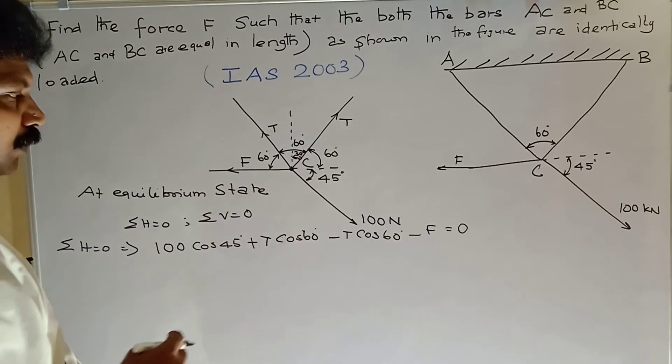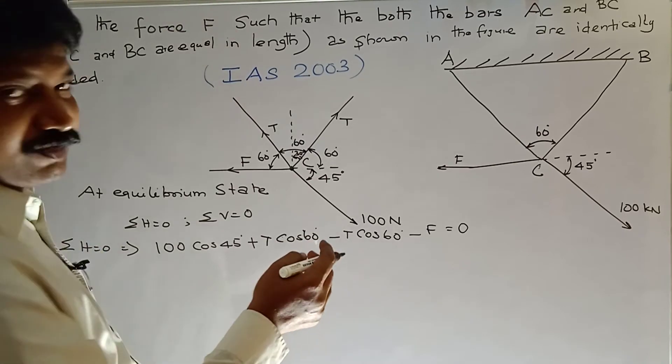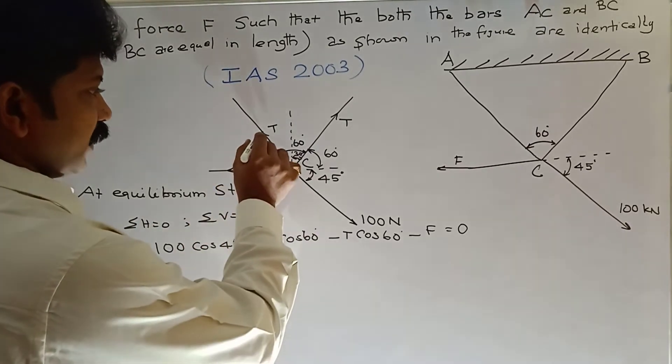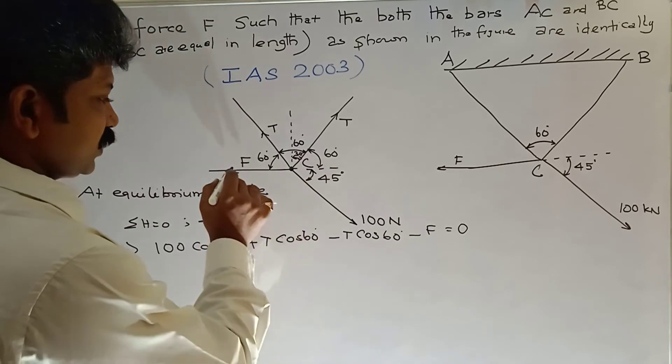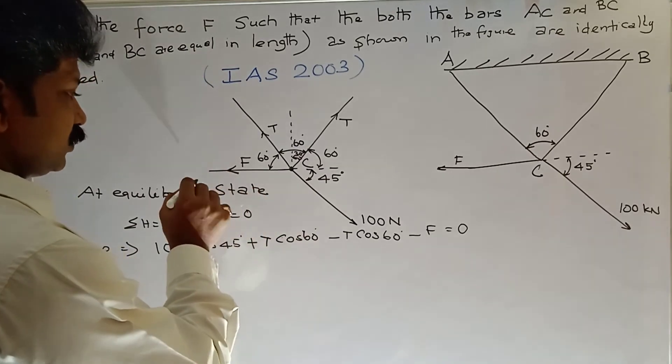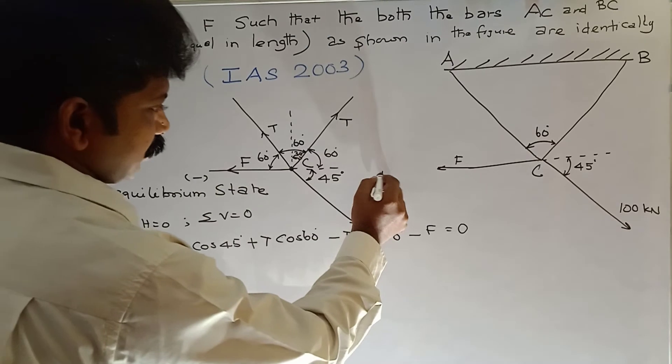Minus T cos 60 towards left side direction, so negative. F towards left side direction, so negative sign.